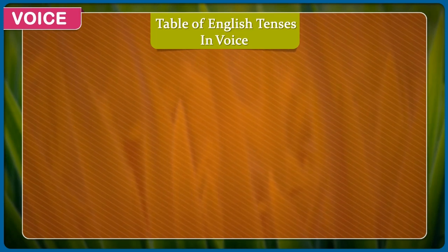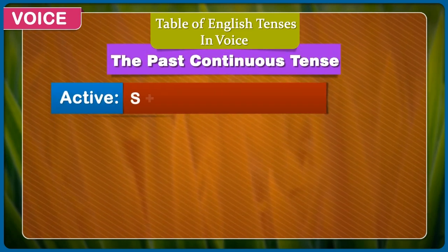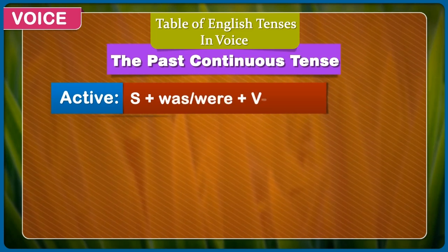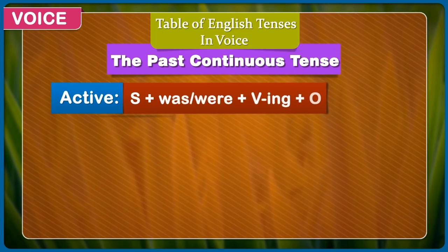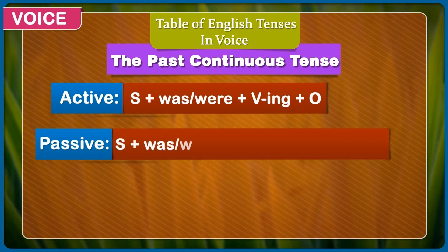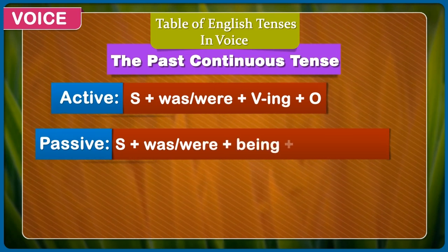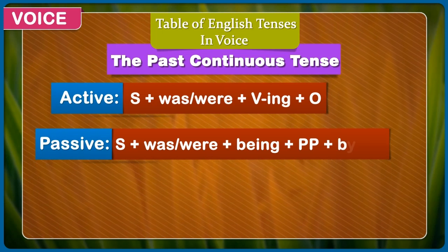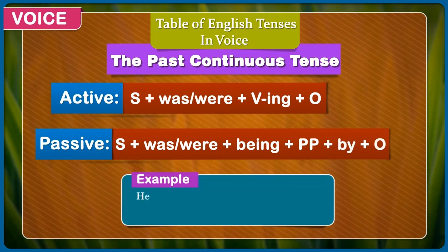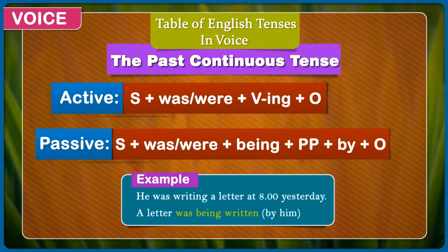Table of English tenses in passive voice. The past continuous tense. Active: subject + was/were + verb with -ing + object. Passive: subject + was/were + being + past participle + by + object. Example: He was writing a letter at 8 yesterday. A letter was being written by him.